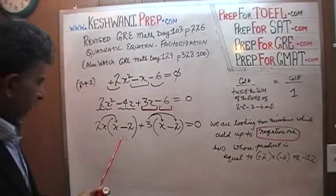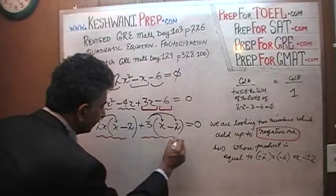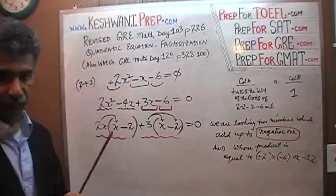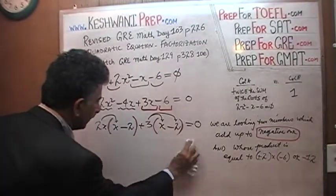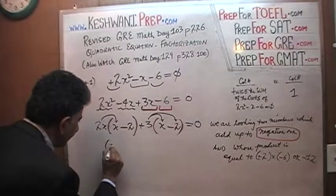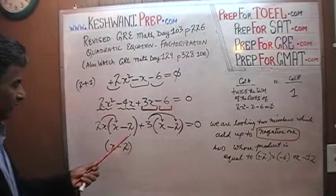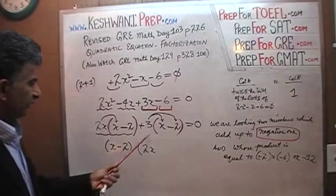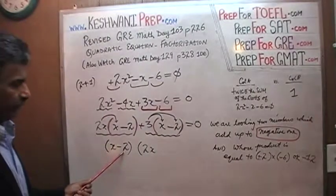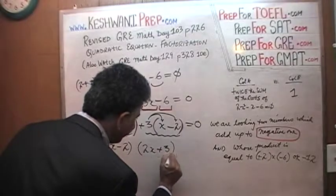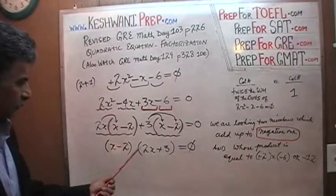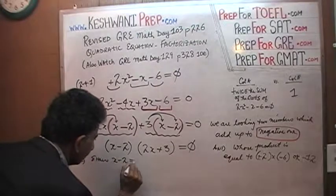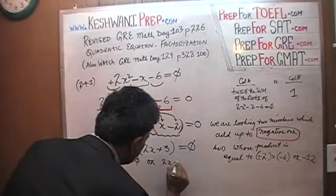Now we look at these two grouped parts. The common factor in both parentheses is x minus two. Taking out x minus two as common: from the first group we're left with two x, and from the second group we're left with three. So the factored form is the quantity x minus two times the quantity two x plus three, all equal to zero.